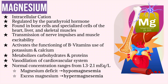Magnesium is an intracellular cation — intracellular meaning that it lives inside of the cell, and cation meaning that it is a positively charged electrolyte. It is the most abundant intracellular cation after potassium. Magnesium is found in bone cells, specialized cells of the heart, liver, and skeletal muscles. It is however stored mostly in bones and cartilage. Only a small amount of magnesium is found in the extracellular fluid.